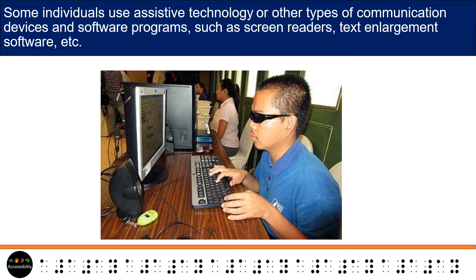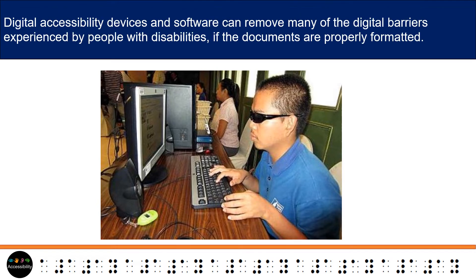Some individuals use assistive technology or other types of communication devices and software programs, such as screen readers, text enlargement software, etc. Digital accessibility devices and software can remove many of the digital barriers experienced by people with disabilities, if the documents are properly formatted.